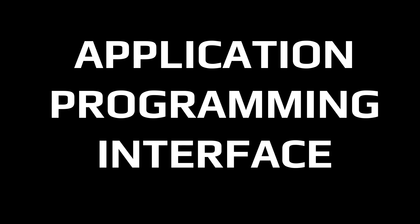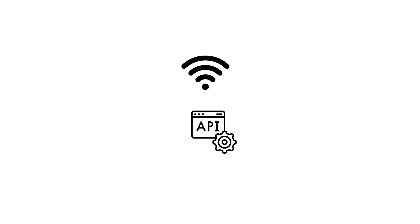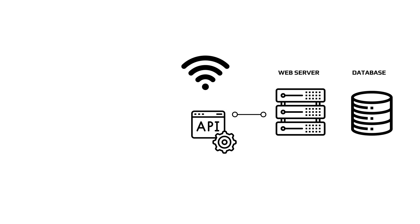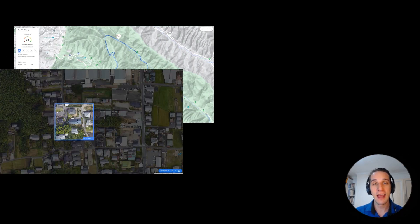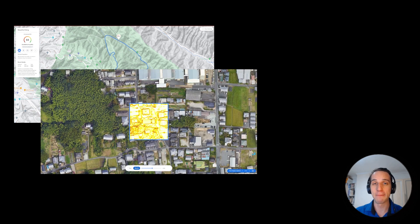In case you don't know what an API is, it stands for Application Programming Interface, which essentially serves as a data transfer between two pieces of different software. This is very often used in software development to access specific features from other software without understanding the underlying programming or having to make your own. So in this case, you can access any of Google's analytics and transmit it to your own software and apps.